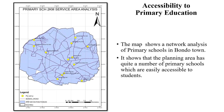For primary schools — shown in yellow — the physical planning handbook indicates that students should be able to access primary schools within 2 kilometers. I performed a service area analysis of 2 kilometers in Bondo, and the results show that there are two points not covered, meaning those areas are slightly underserved, though settlement density there is not very high.